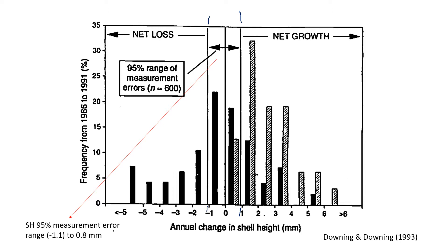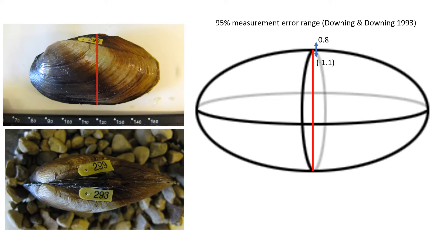So we're going to call that between 0.8 on the positive side and negative 1.1 on the negative side. That's how much wiggle there was approximately in Downing and Downing's results for shell height of Lampsilis siliquoidea.